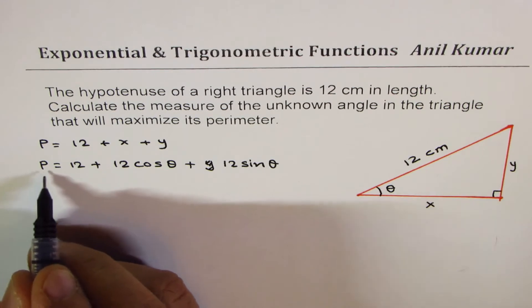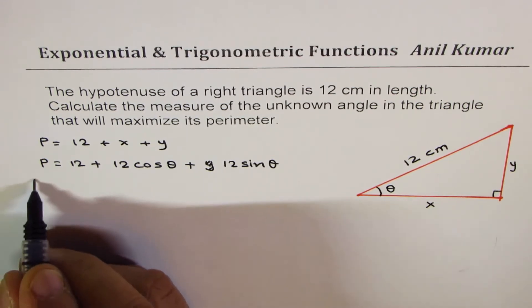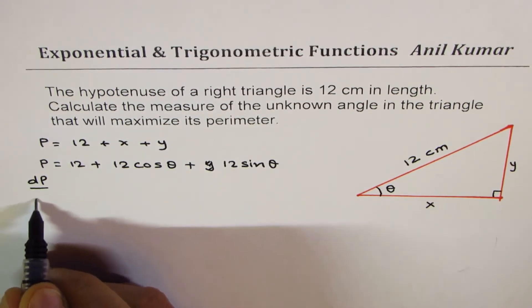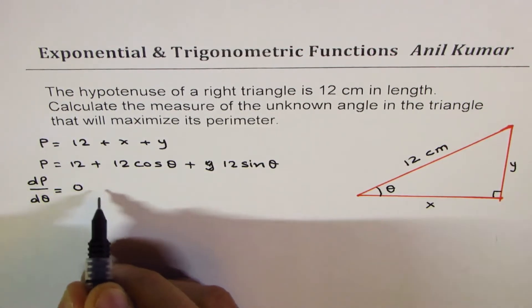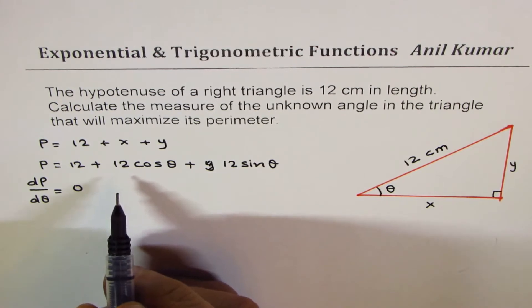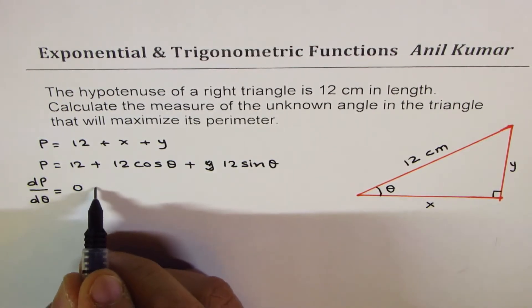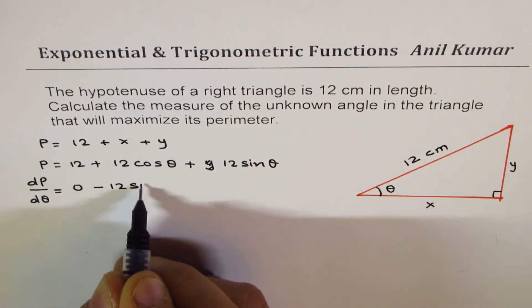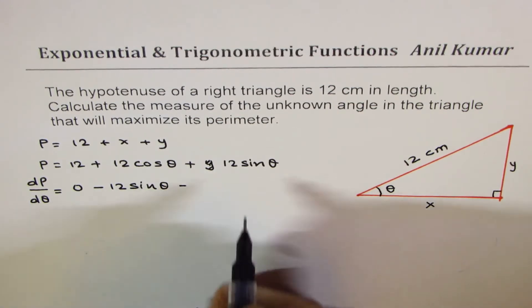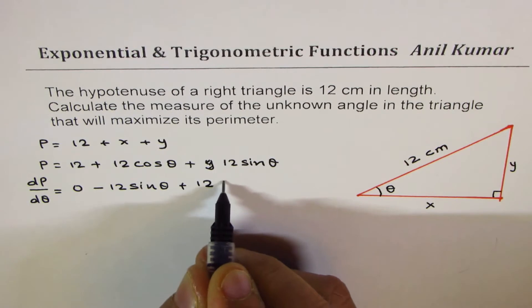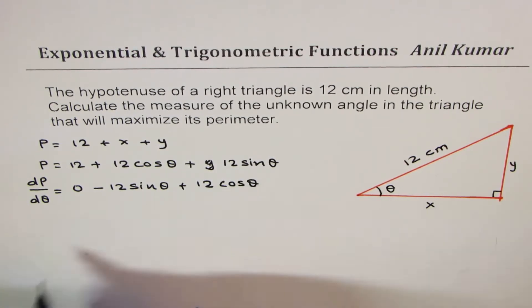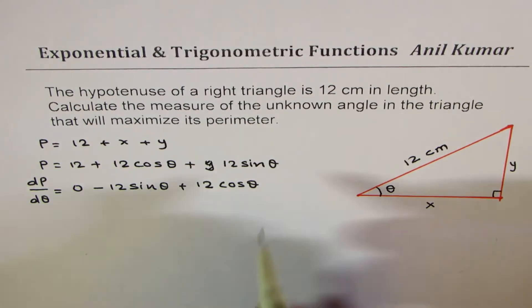To maximize the perimeter, we'll find the derivative with respect to theta. That is dP/dθ is equal to derivative of constant is 0, plus 12 cos θ derivative is minus 12 sin θ, and the derivative for plus 12 sin θ is 12 cos θ, correct. For critical number, we have to equate this derivative to 0.